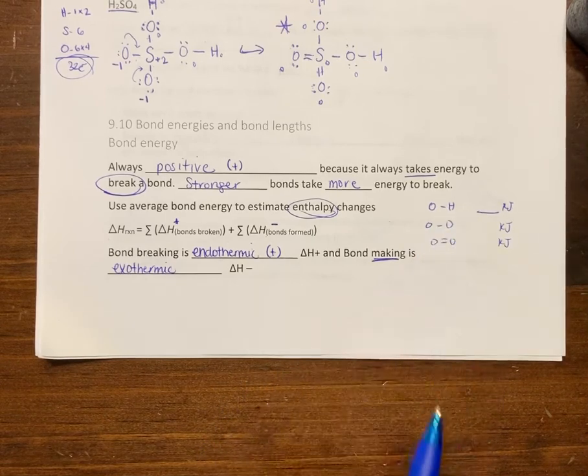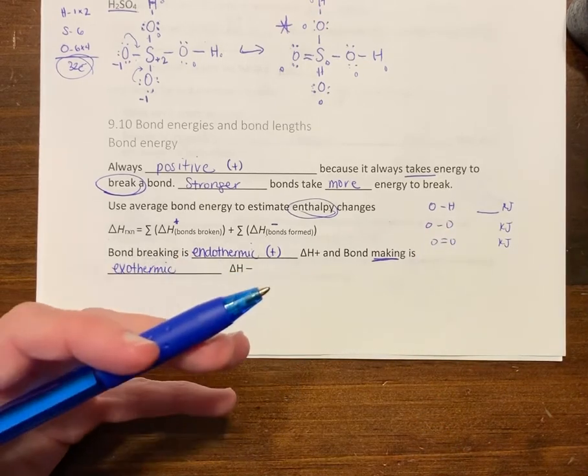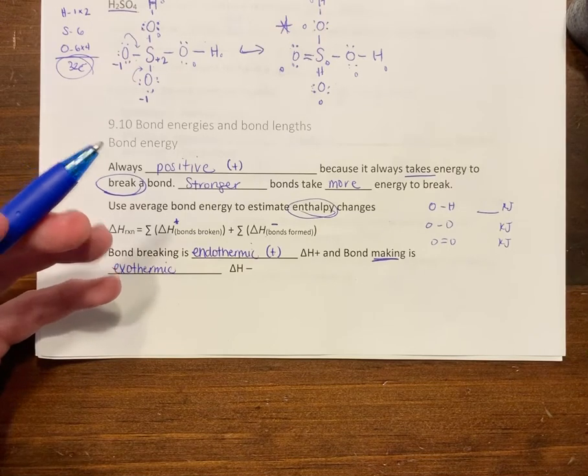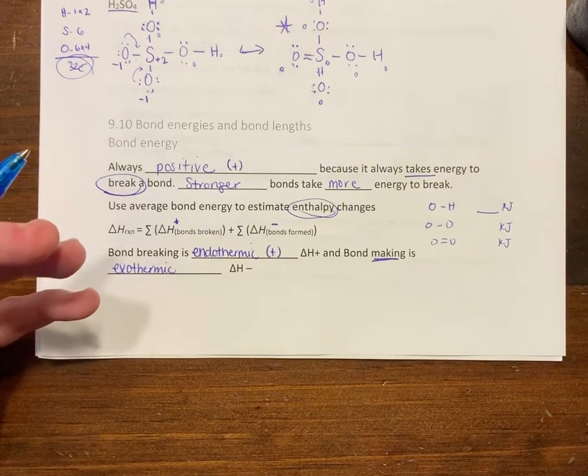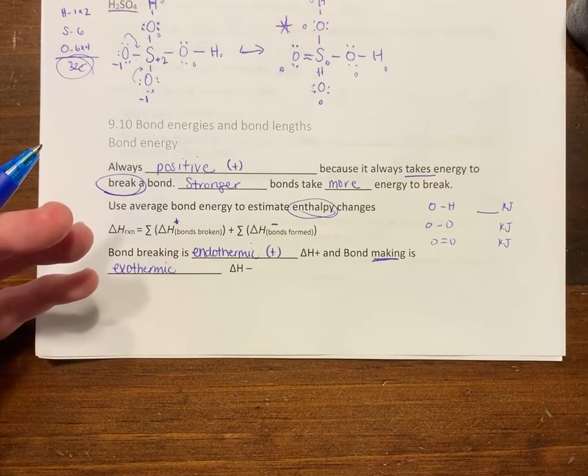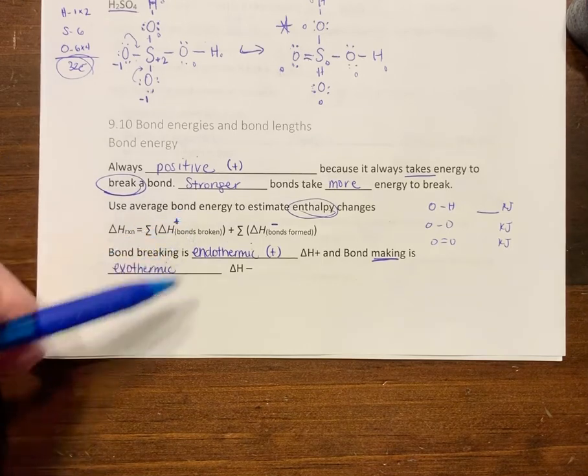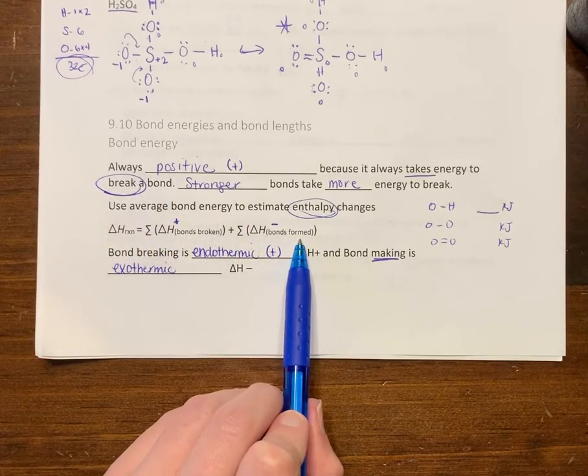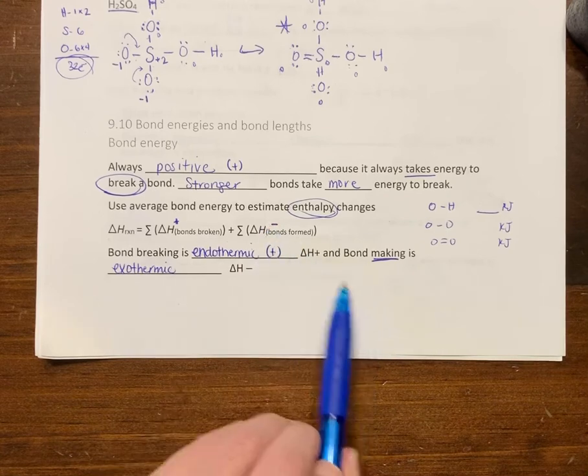You have to draw your Lewis structures, count up the bonds that are going to be changing, the ones that you're going to break, add them up, then add up how many bonds you're forming. They'll be negative.